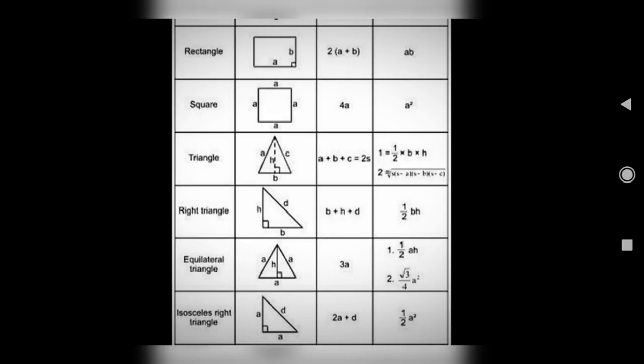Equilateral triangle: perimeter is 3A and area is half into A into H, or otherwise root 3 divided by 4 into A square.